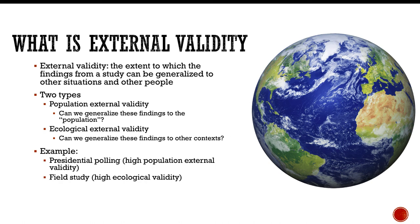So an example of high population external validity is presidential polling. Those pollsters generally, not always, but generally do a good job of getting a random sample from the population, which is why generally, except for the last election, we can generalize the results from polling and make good predictions on who's going to win the presidential race.